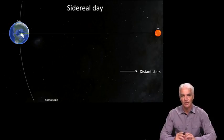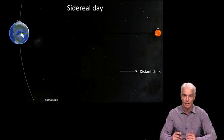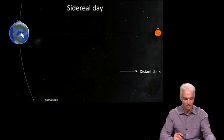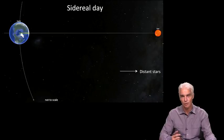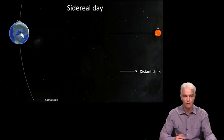Again, a sidereal day is how long it takes the Earth to rotate 360 degrees. Now the first time you hear that you might say, oh I know that, that's 24 hours. Well, not exactly, because if the Earth were just sitting there in space and rotated 360 degrees, that would be 24 hours, but that's not what happens.